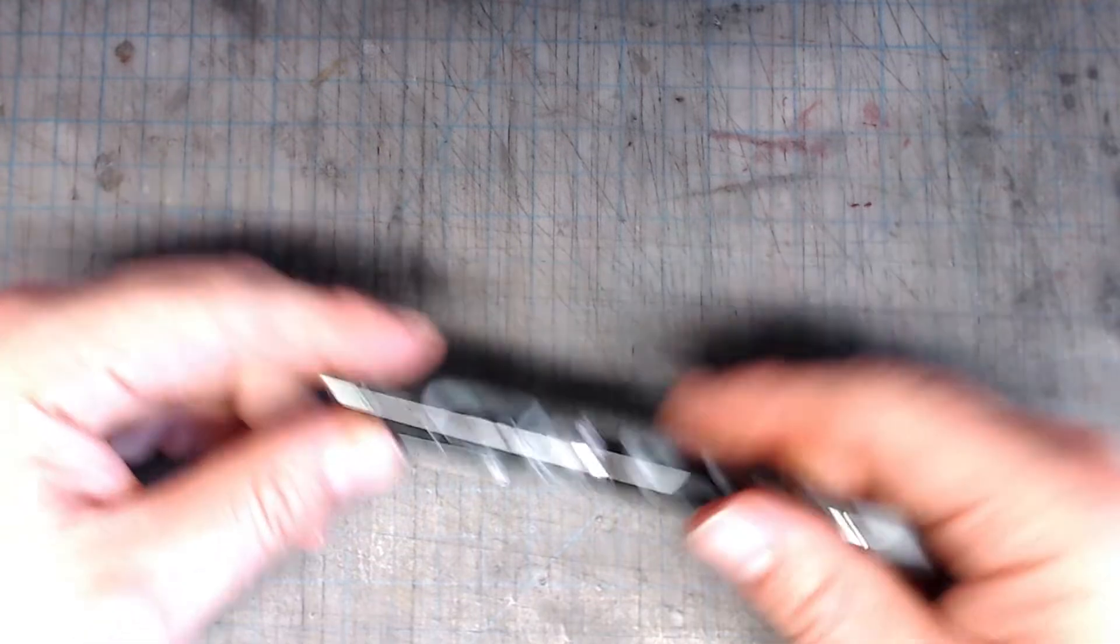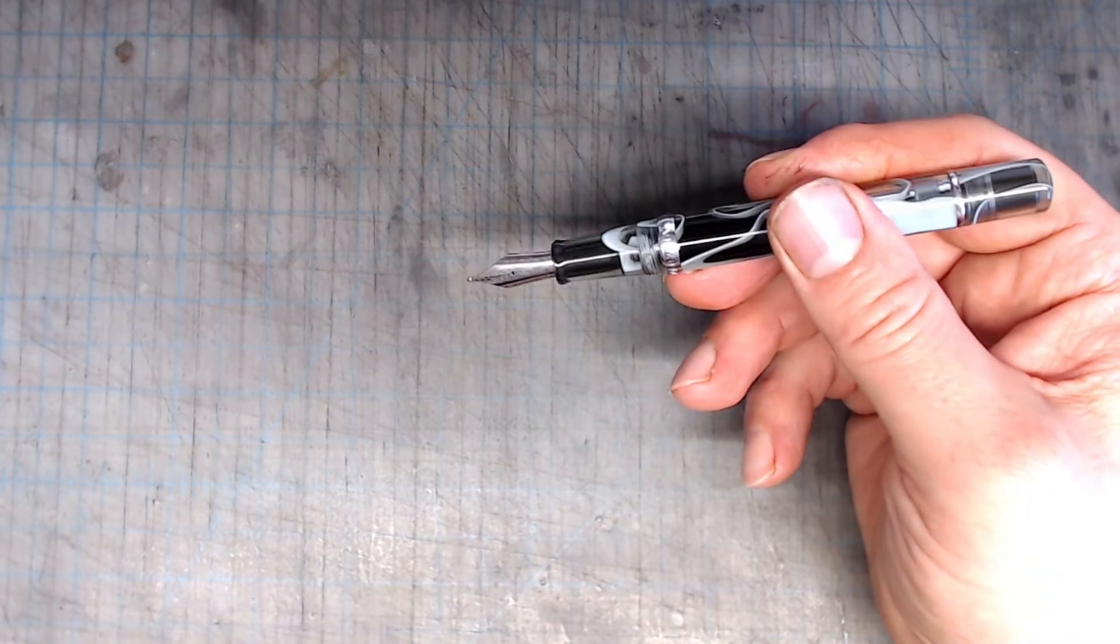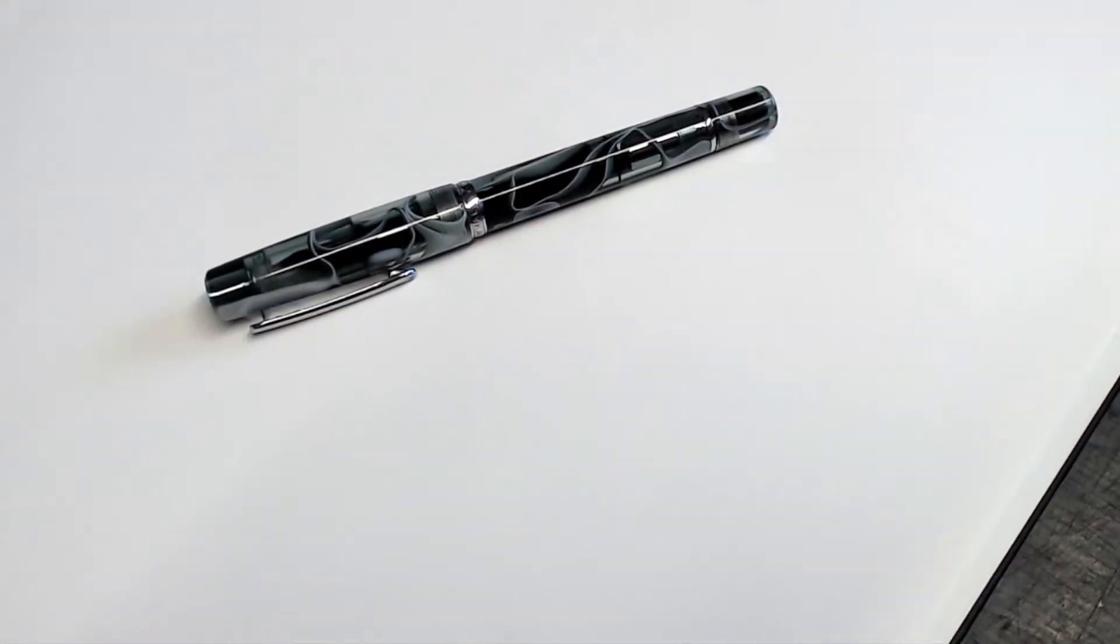Now let's talk about the nib. This is a steel number six nib in medium, made by Narwhal in house. Okay, now let's take this pen through its paces.